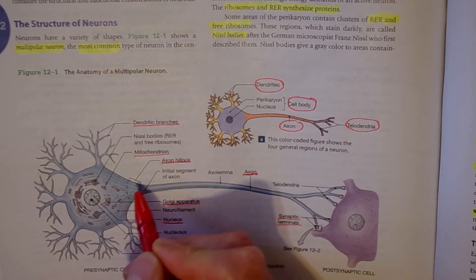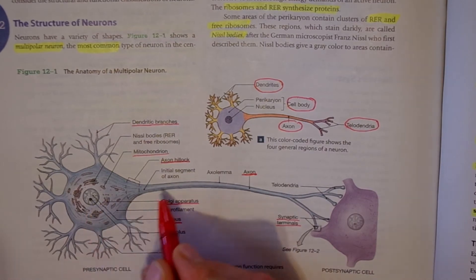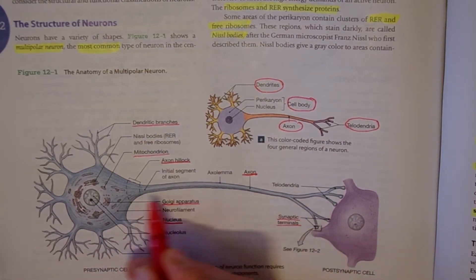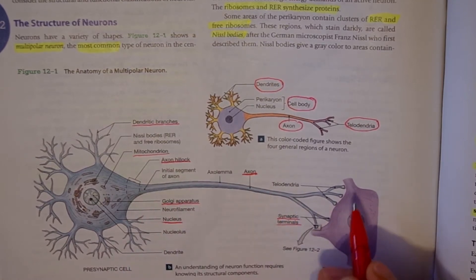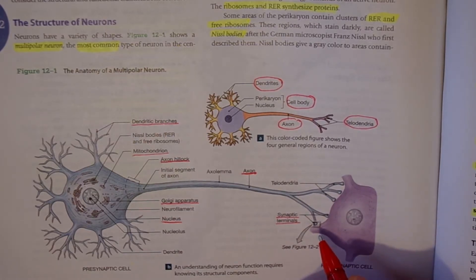This section here is called the axon hillock and it separates the cell body from the axon, which is this long branching section. At the end of the axon we've got our telodendria which have synaptic terminals. Nerve impulses get passed from neuron to neuron — the impulse travels through the cell body, then through the axon, and then passes on to the next neuron. That is how our body sends information through electrical signals.